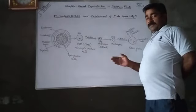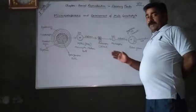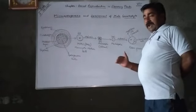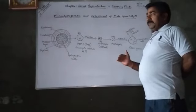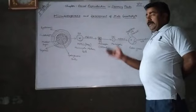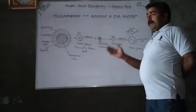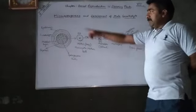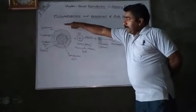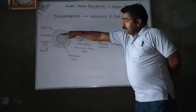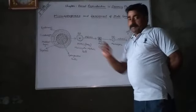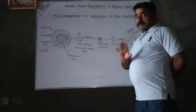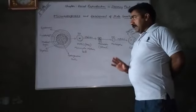Further, the cells of the parietal layer divide by mitotic cell division, and the newly formed cells form four concentric layers, which I have shown you: epidermis, endothecium, middle layer, and tapetum. But there is no division in sporogenous cells.